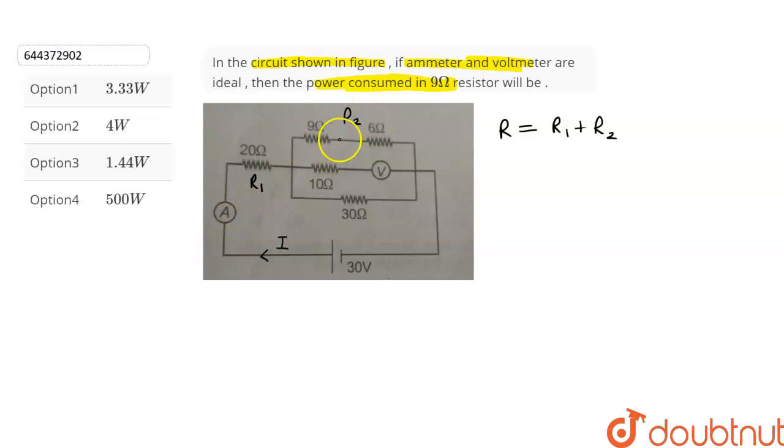We can see that these two resistors are connected in series. So the net equivalent resistance of these two resistors will be 9 plus 6 which is equal to 15 ohms.